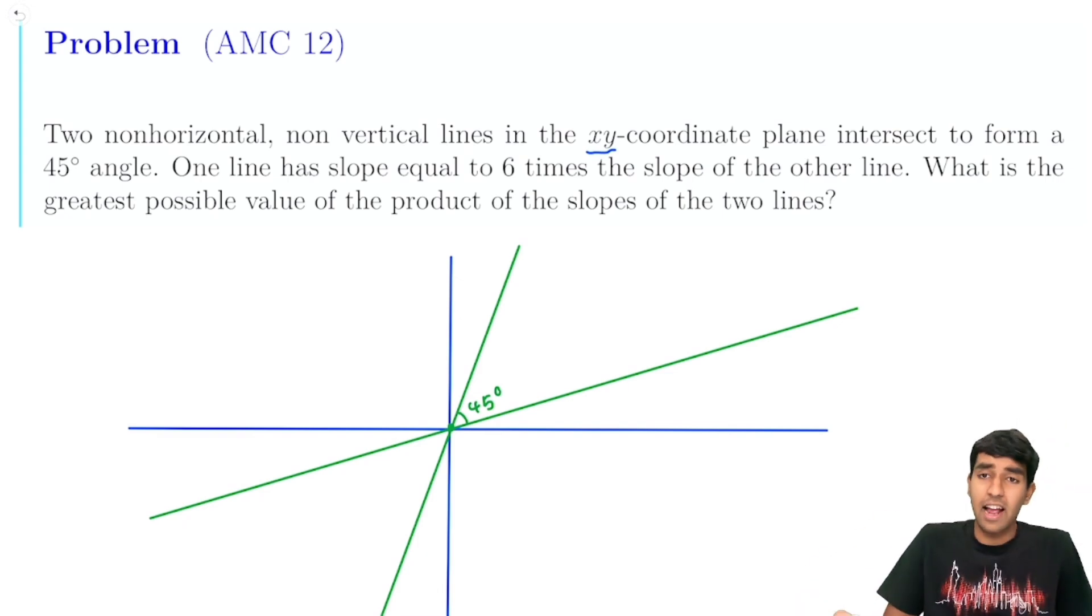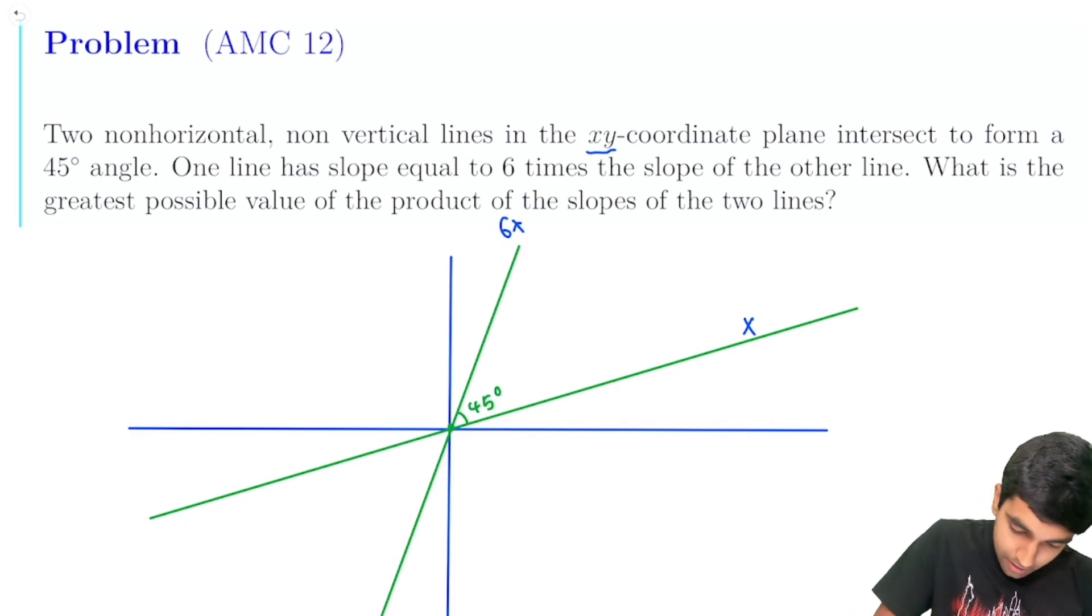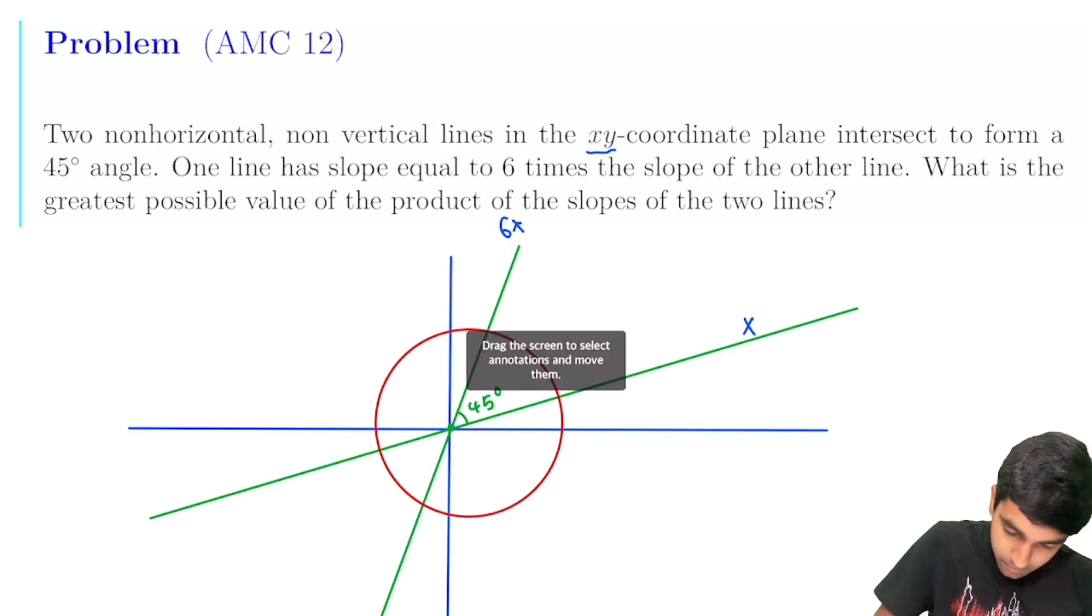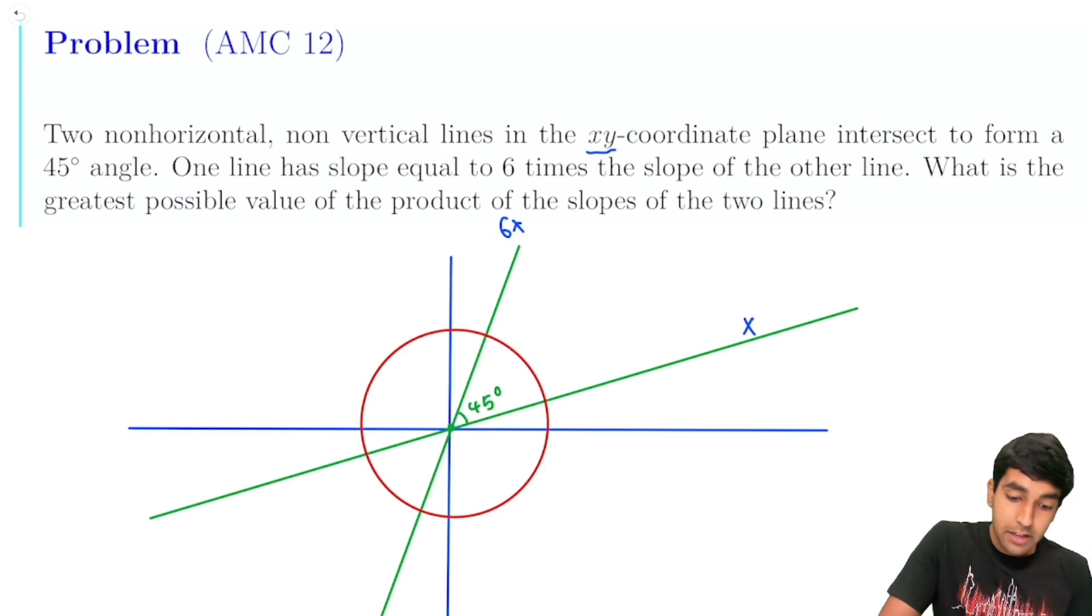Let's say this line has a slope of x. This line, slope of six x. So what we're going to do here is to make this a polar coordinates problem, we're going to draw a circle centered around the origin. And rather than dealing with these entire lines, let's focus on these intersection points.